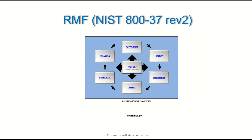The next phase is categorize — you categorize your information system. The whole point is to figure out what the high-water mark would be: what will your system be considered? Is it going to be a low, moderate, or high system?